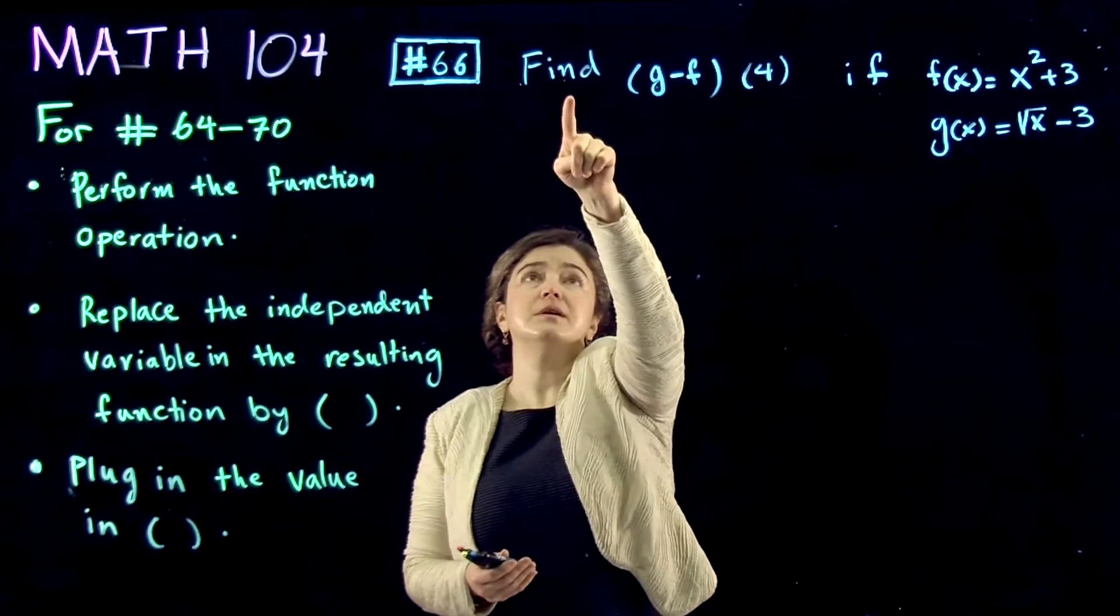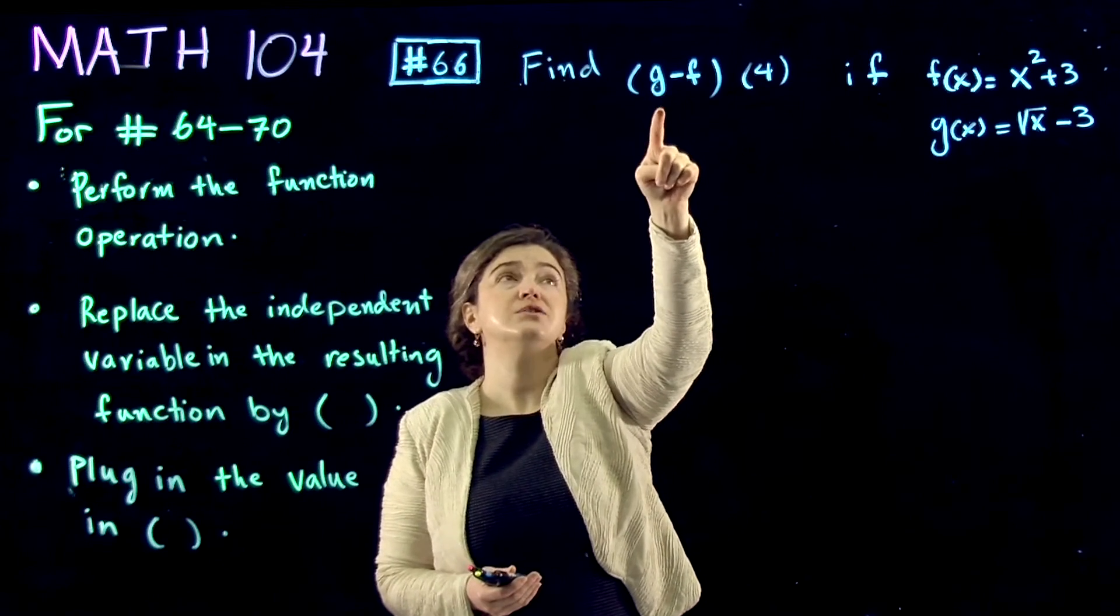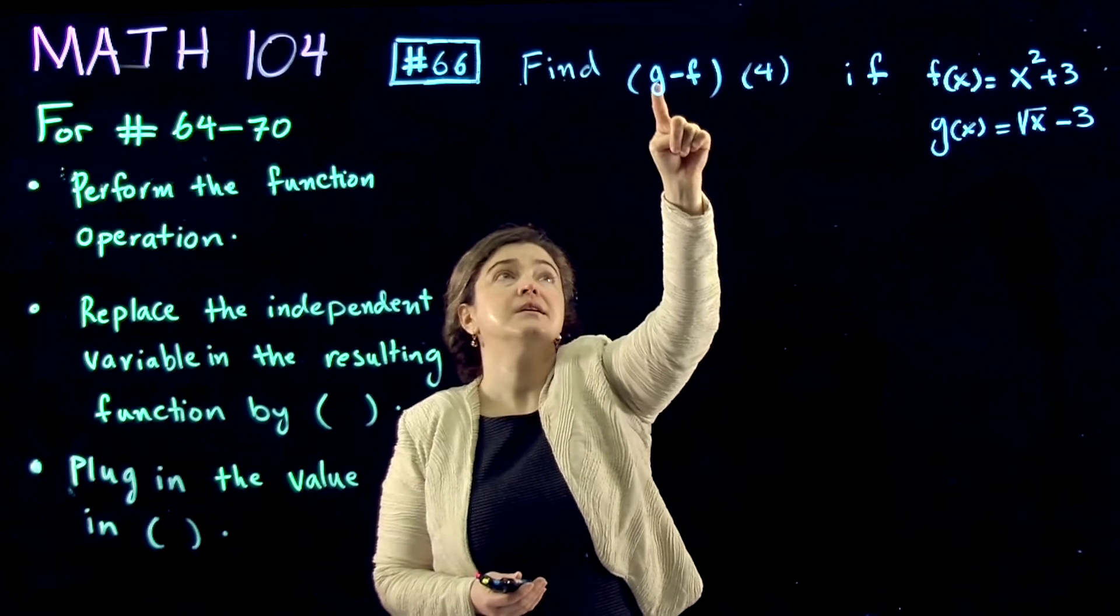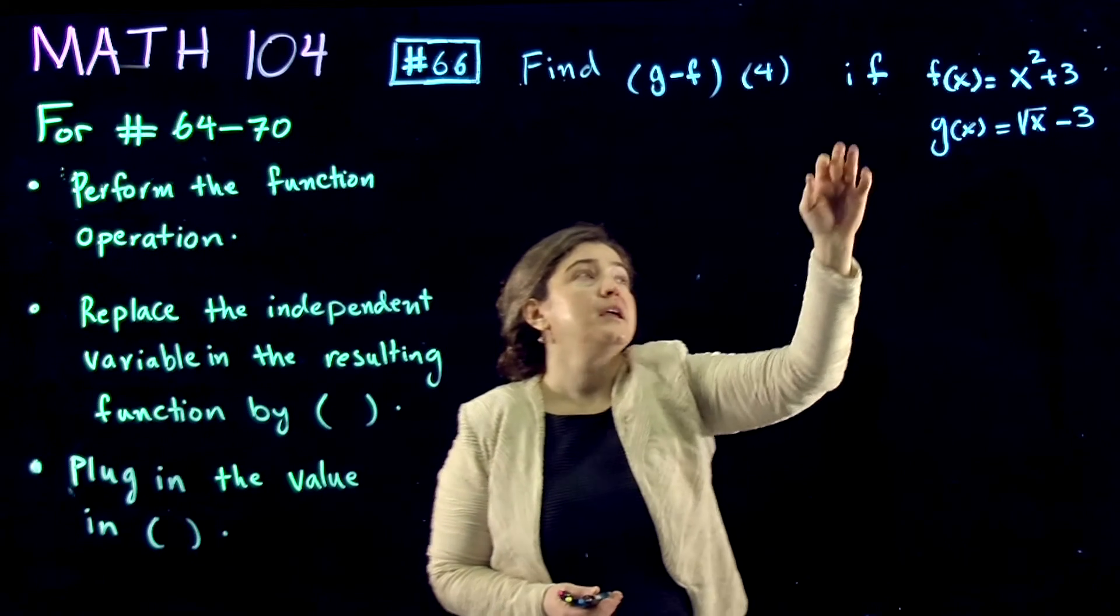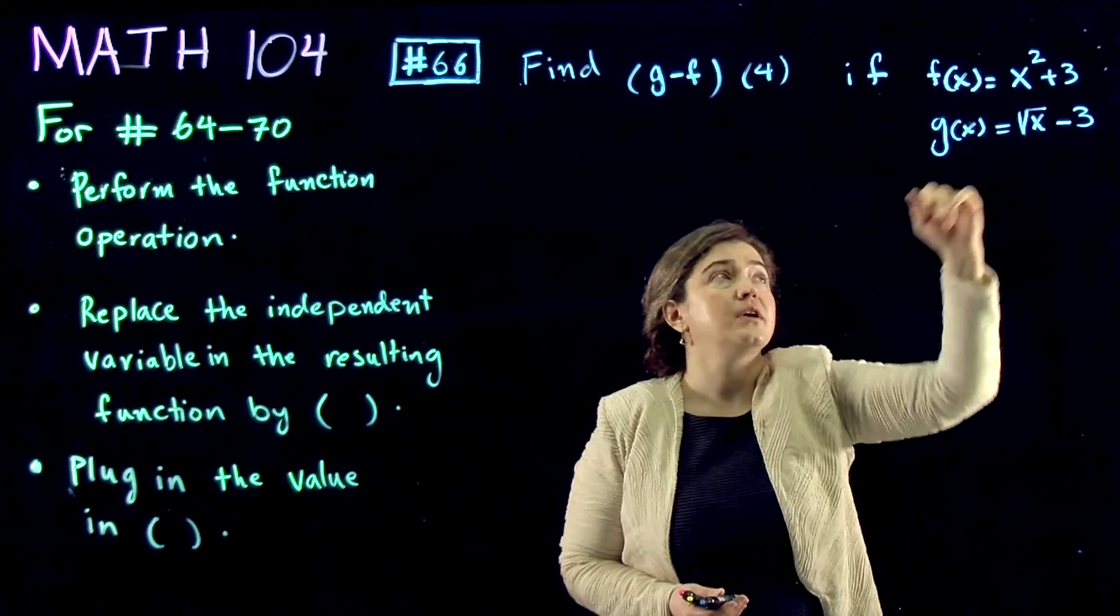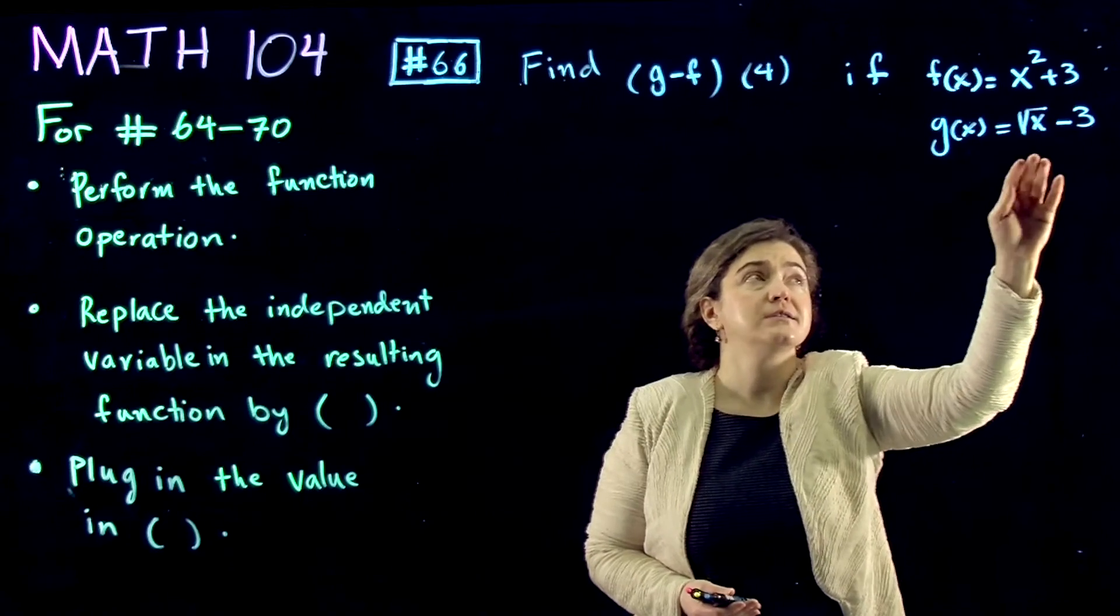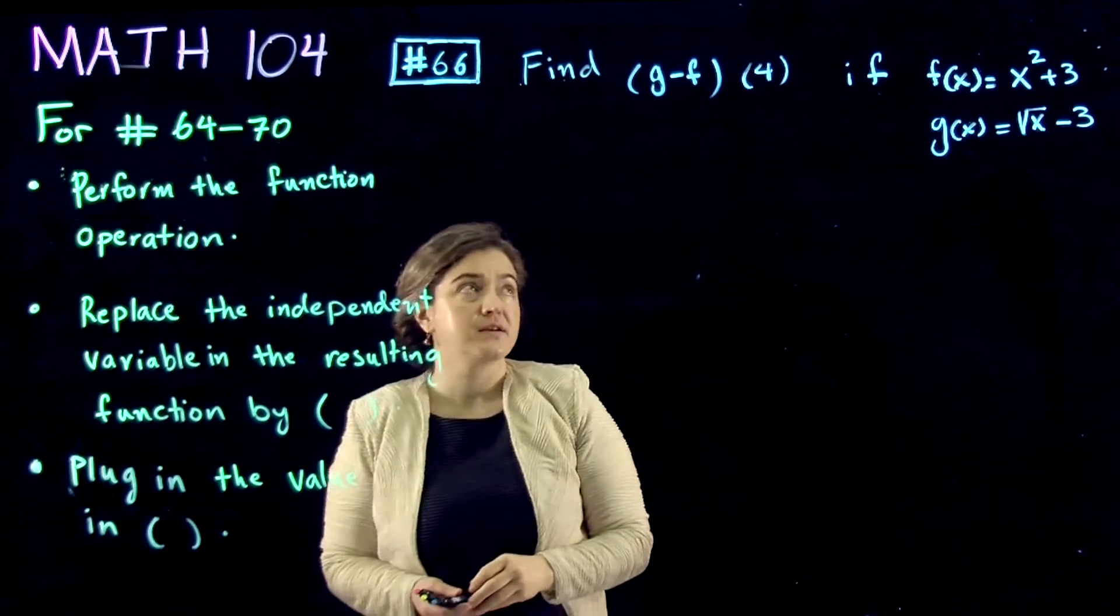So the question is, find g minus f of x at 4, if f of x is equal to x squared plus 3 and g of x is square root of x minus 3.